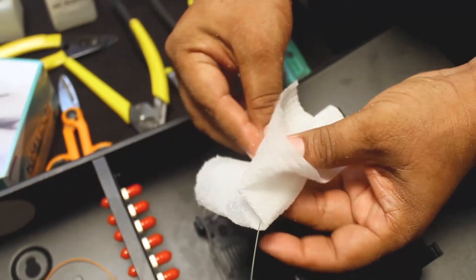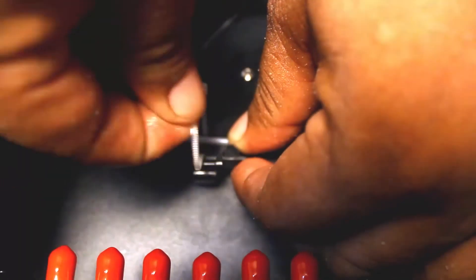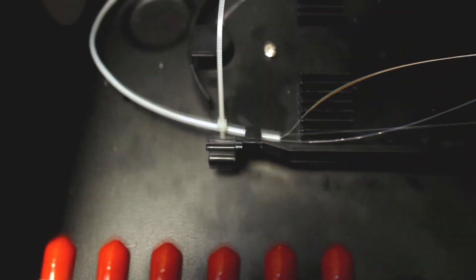Clean the fibers with an alcohol pad, cable tie the remaining buffer to the splice tray, and remove the zip tie excess.